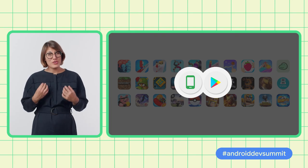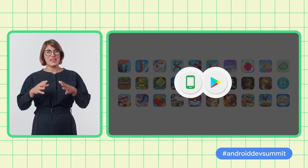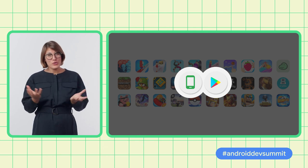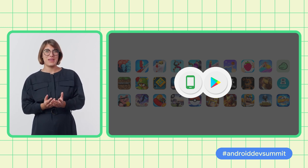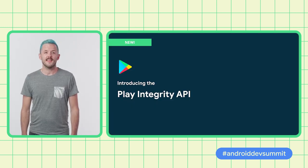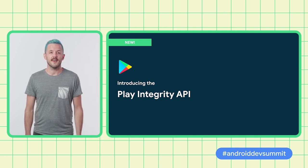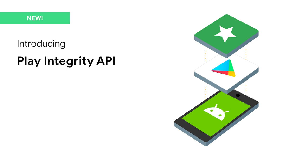So we have unified our most advanced integrity technologies so that you can protect your apps by calling a single API. The new Play Integrity API helps you detect risky and untrustworthy interactions with your app. It gives your back-end server signals so that it can decide whether or not to trust an interaction with your app.